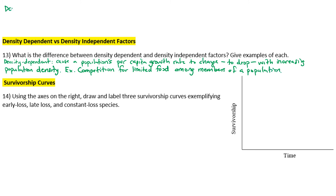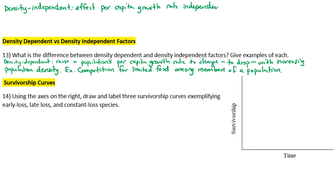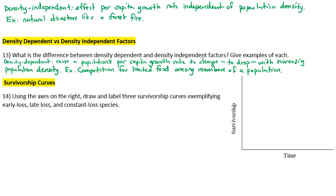Density-independent factors affect the per capita growth rate independently of population density. An example would be natural disasters like a forest fire.